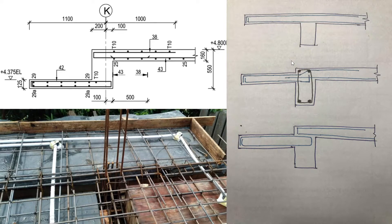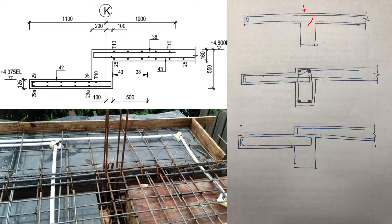Here are some other examples of reinforcement detailing. Where the slab is continuous with no level drop, you can continue the top reinforcement, and you must always provide bottom reinforcement as well. Where there is a small level drop, you cannot continue the reinforcement straight through — in these cases you may crank the reinforcement. The crank should be made within the beam; you cannot crank it outside the beam.